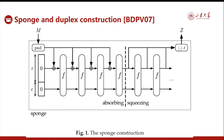We start with the sponge construction. Here the function f is a cryptographic function or a cryptographic strong permutation in most cases. The sponge construction starts with some initial value and iteratively calls the function f. Each time, a block of message with r bits is absorbed into one part of the state, while the other c bits of the state are not touched. After an iteration, the r-bit state will become the output. This sponge construction thus absorbs the message and produces some digest.